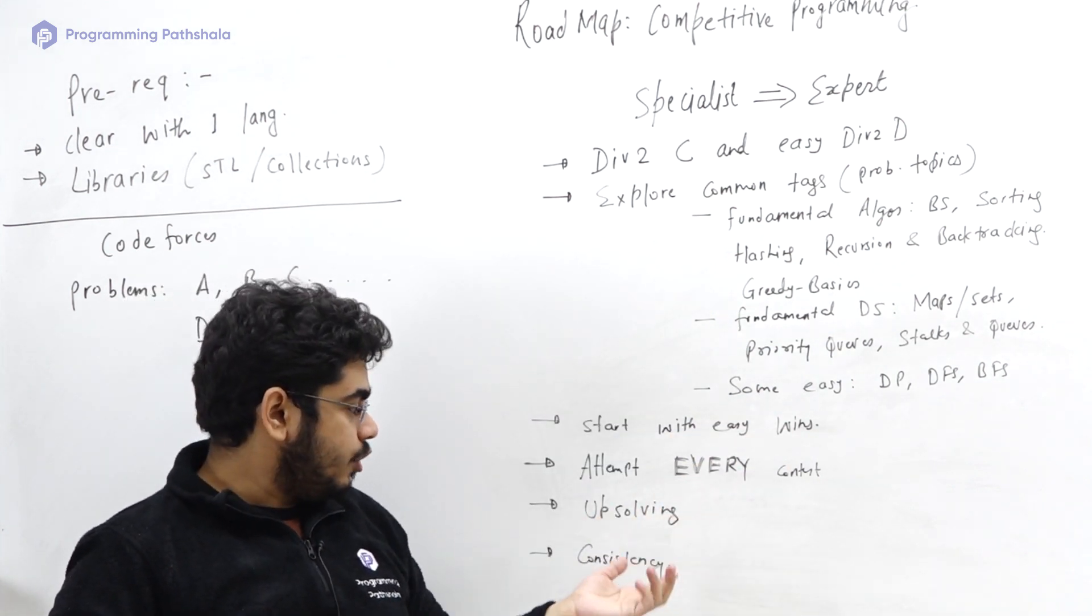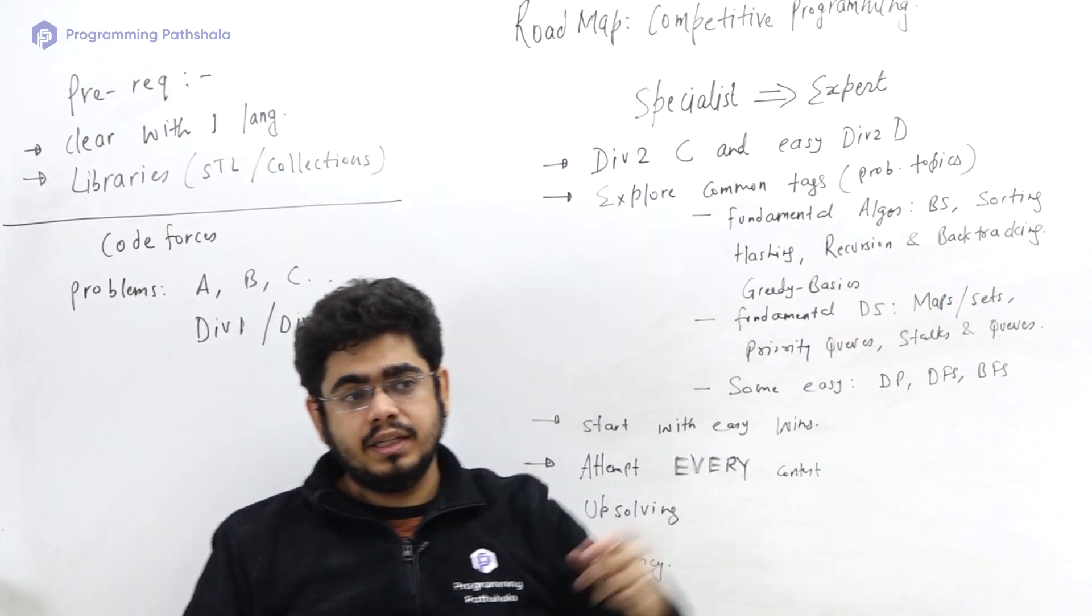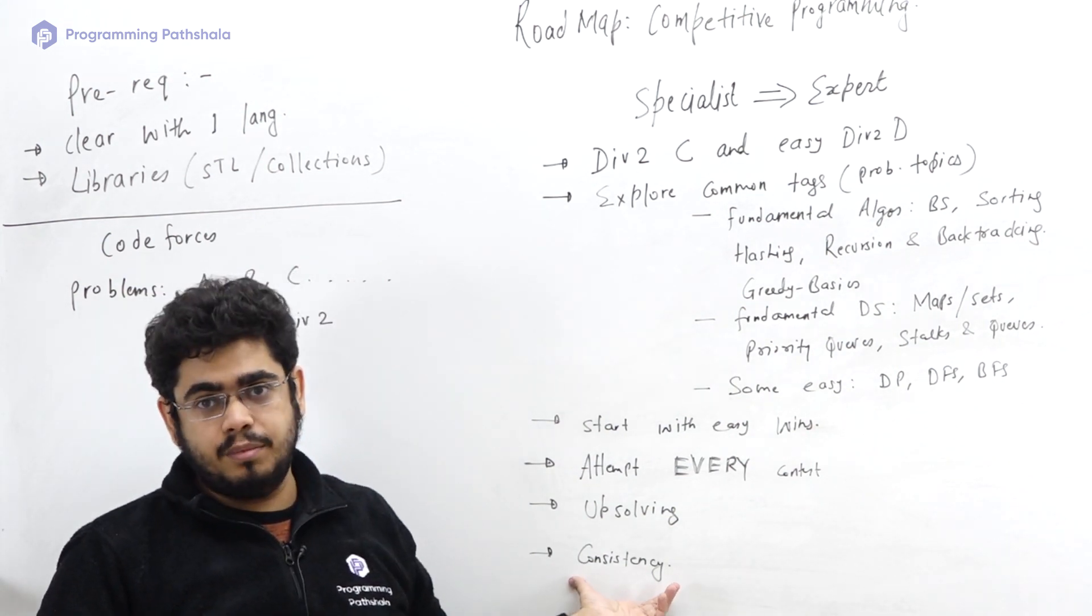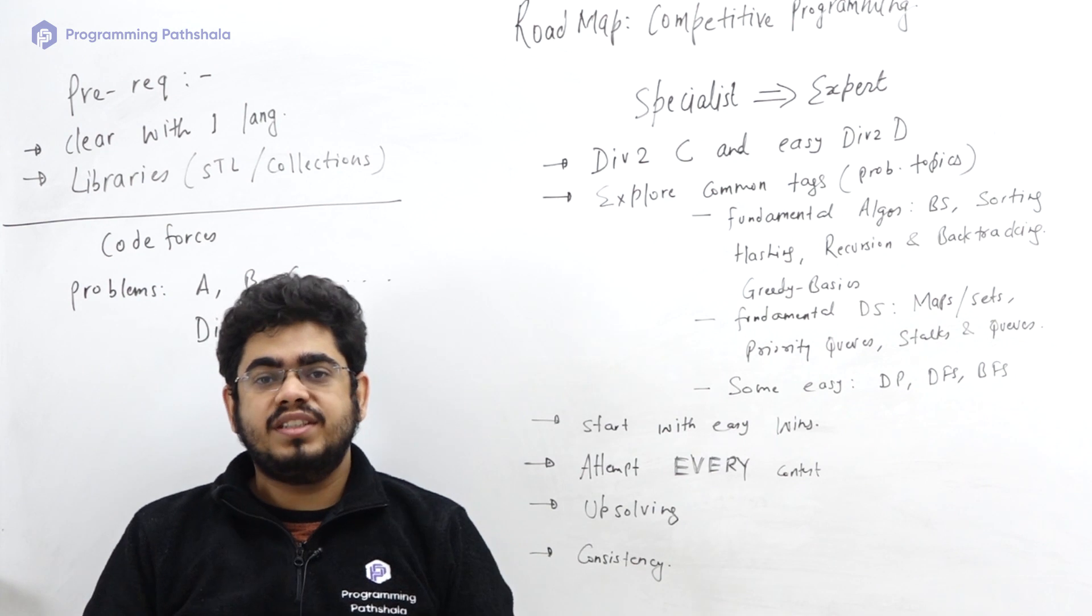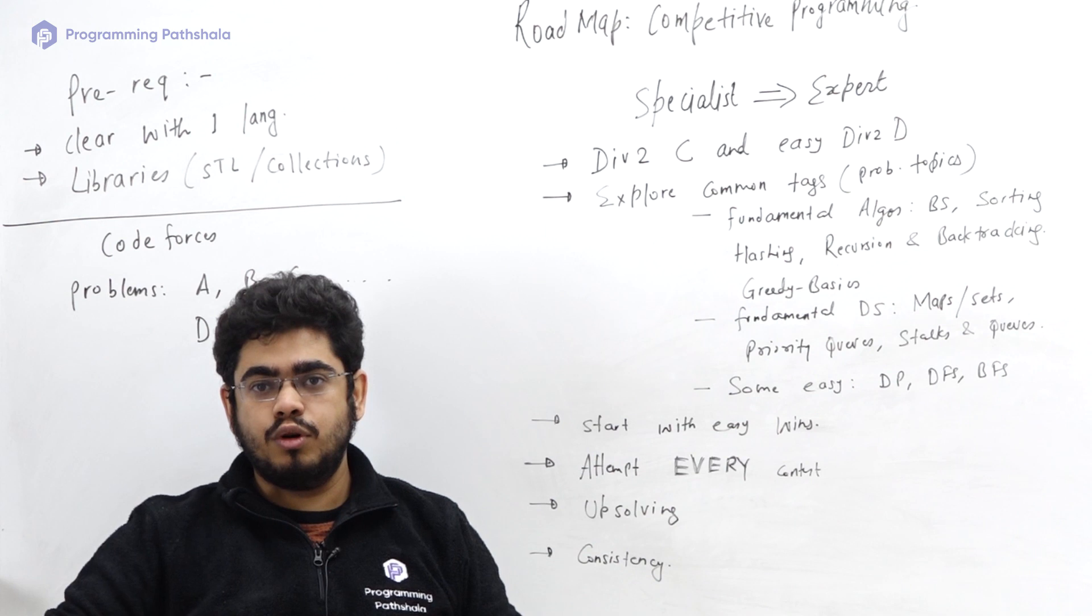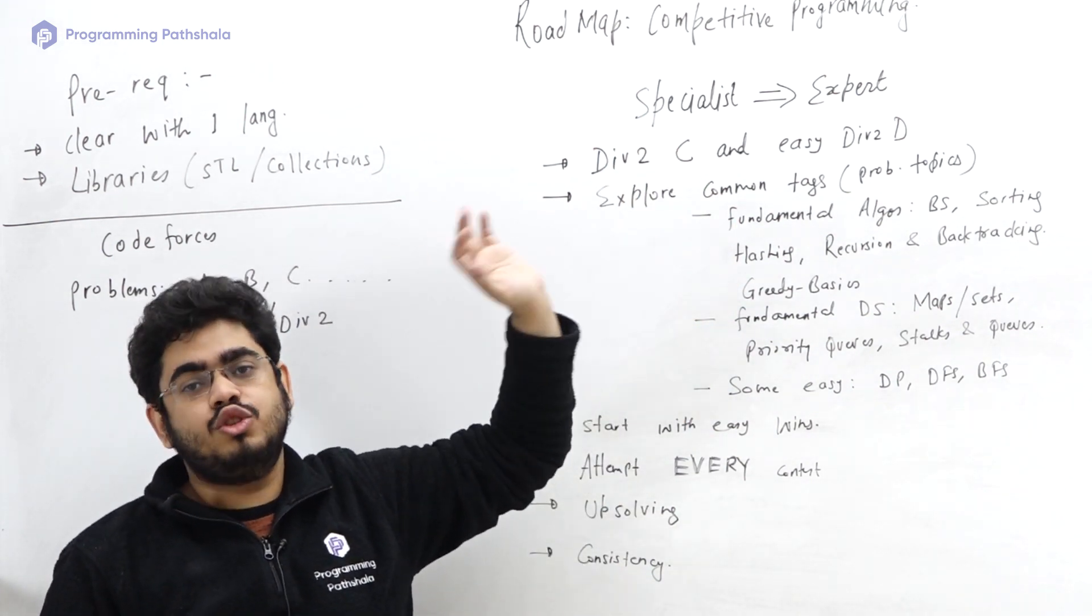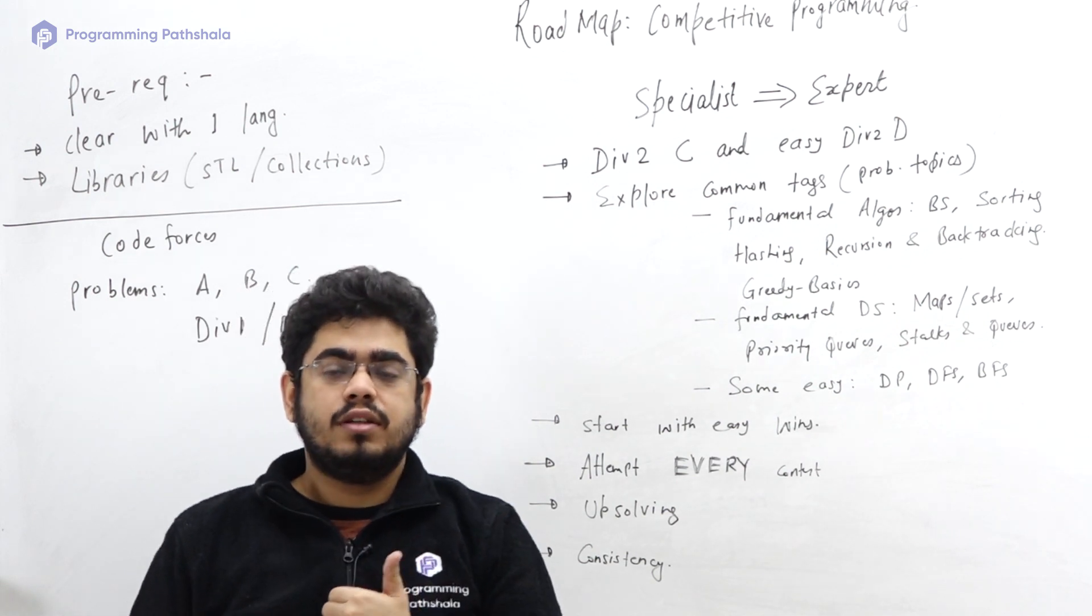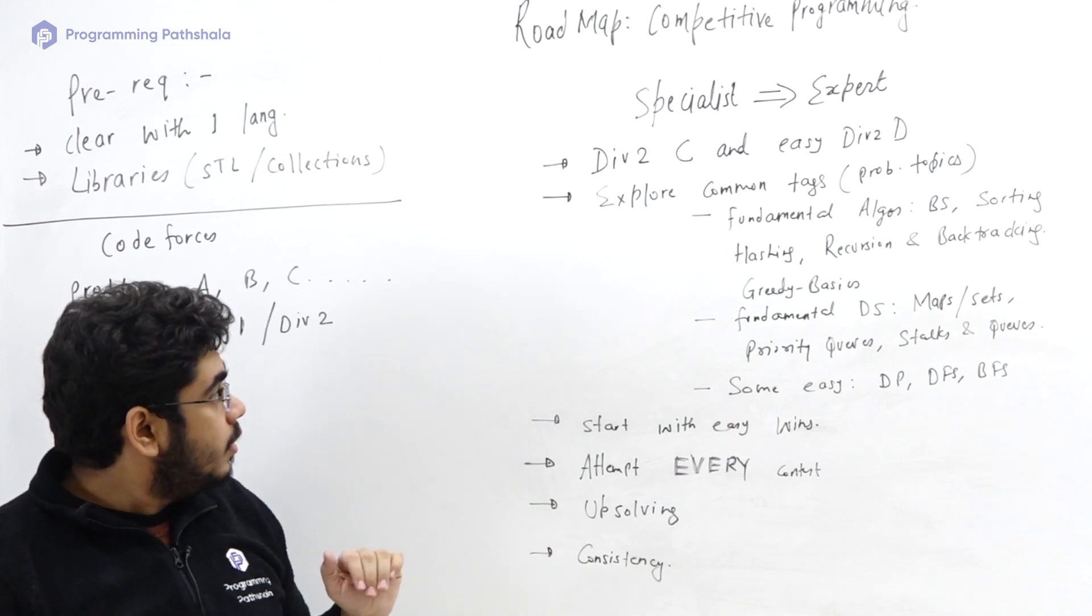Basically this cycle: giving contest, upsolving, and during upsolving if you find a new technique, going ahead and knowing about that technique. If this is done in cycle continuously, consistency is very important, continuously - most people fizzle out at this stage. They think that okay we are now specialist, that is a respectable score. They try but they do it seldomly, they get bored out of it. If CP is for you, if you enjoy it, then I would say do this consistently for every contest for at least three to four months and you'll be able to reach the expert stage.